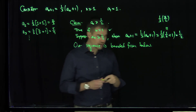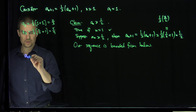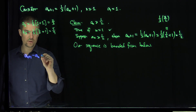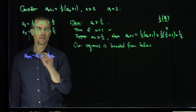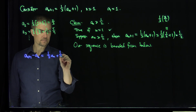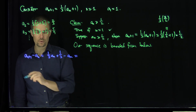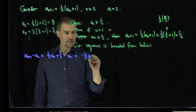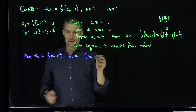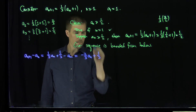Now I want to show the sequence is non-increasing. To do that, let's look at the difference a_{n+1} minus a_n. Substituting, we get one-third a_n plus one-third minus a_n, which simplifies to negative two-thirds a_n plus one-third.